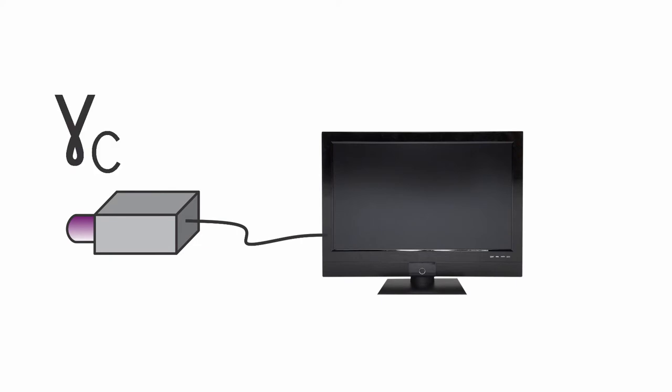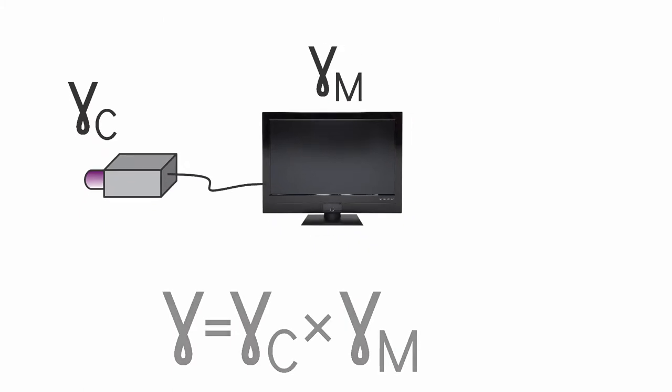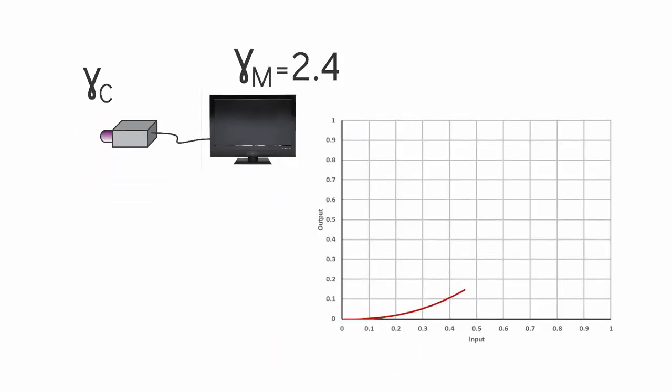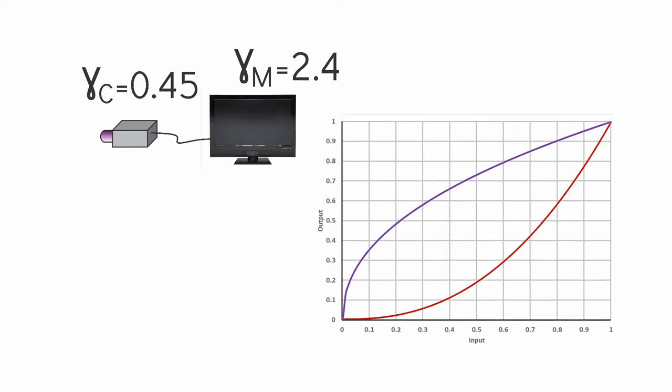When we have a camera connected to a monitor, both the camera and the monitor have a gamma. The combined gamma is just the two gammas multiplied together. Modern monitors commonly have a gamma of 2.4, signal in to light out. That requires the camera to have a gamma around 0.45, so that the light out of the monitor is proportional to the light incident on the image sensor.